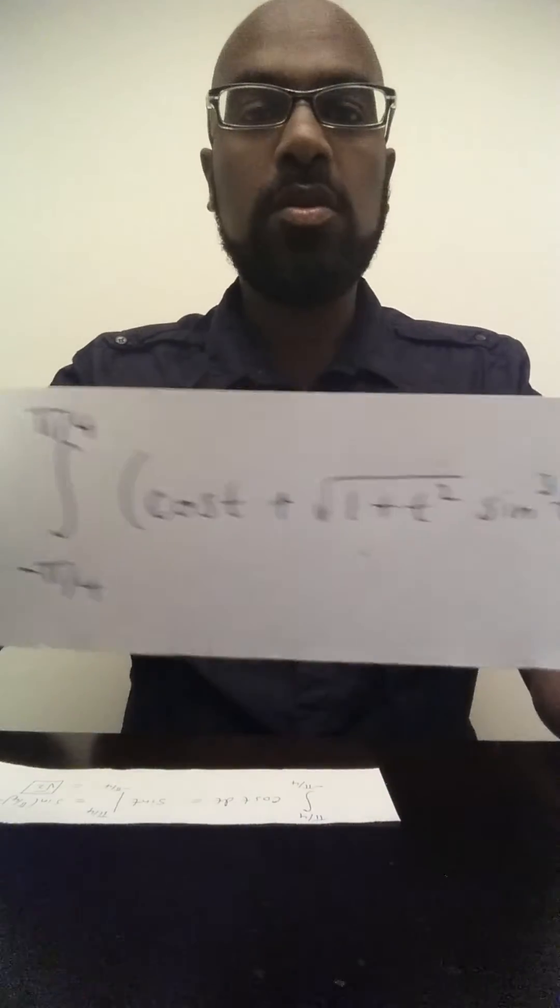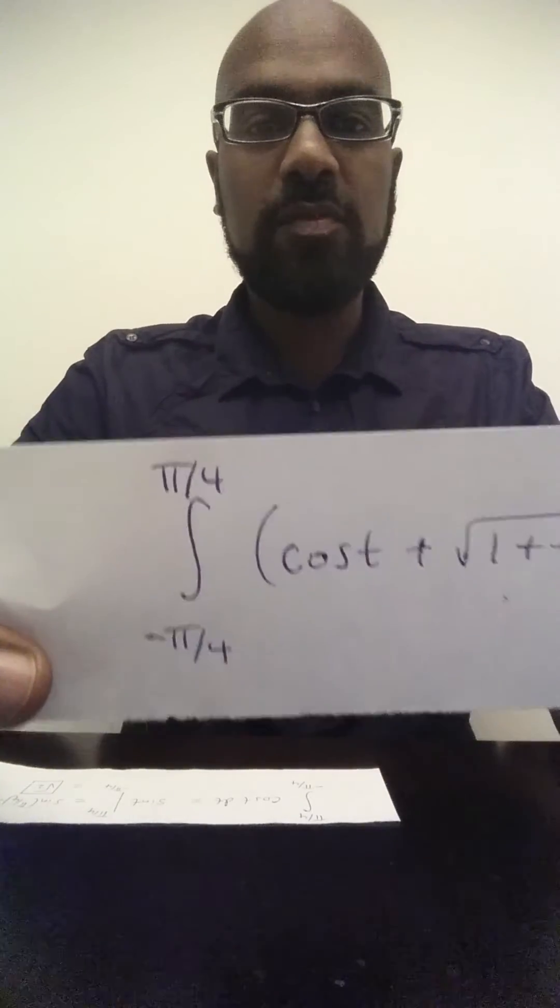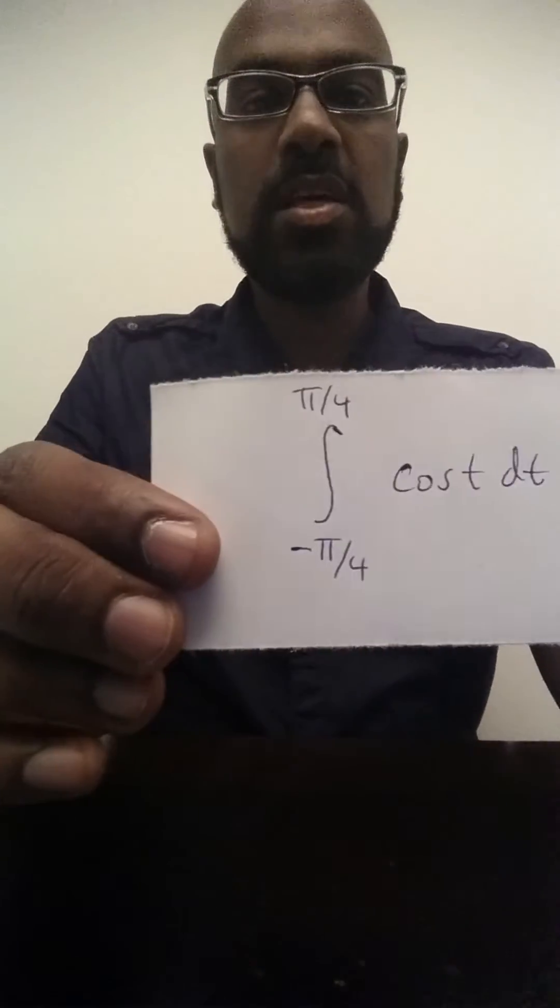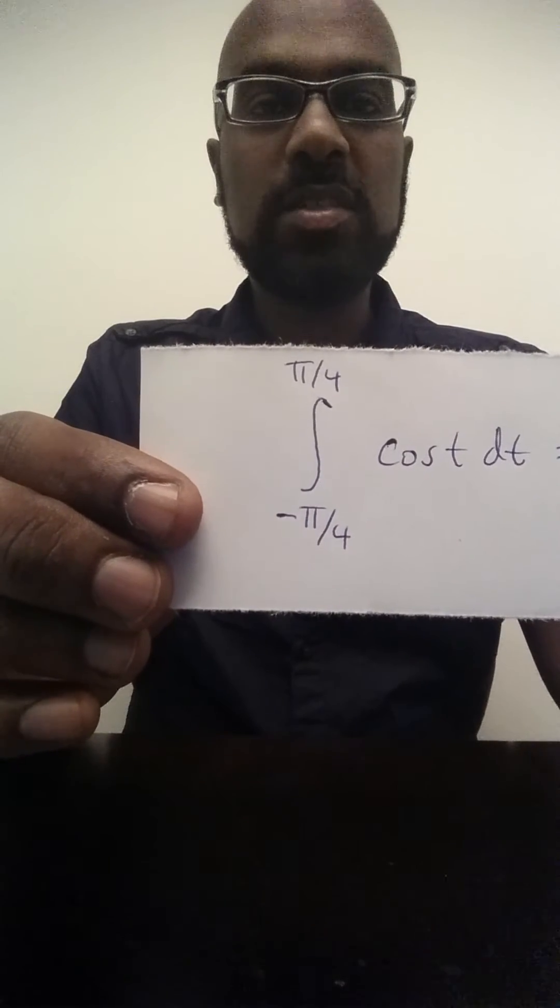So the integral of that entire piece is zero about this symmetric interval. So this seemingly complicated integral simplifies to just the integral from negative pi over 4 to pi over 4 of cosine t dt.